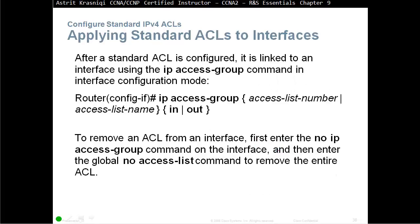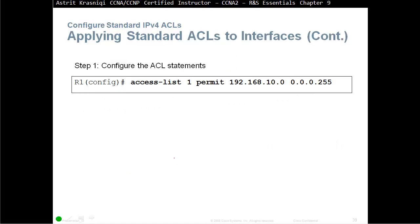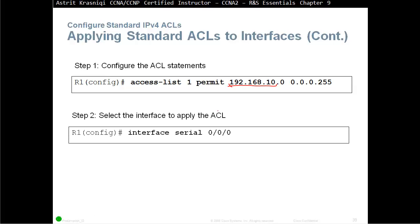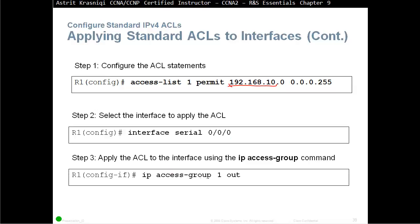Applying a standard ACL to an interface: after a standard ACL is configured, it is linked to an interface using the 'ip access-group' command in interface configuration mode. The command is: 'ip access-group', then the access list number or name, then 'in' or 'out'. To remove an ACL from an interface, first enter 'no ip access-group' on the interface, and then enter the global 'no access-list' command to remove the entire ACL.